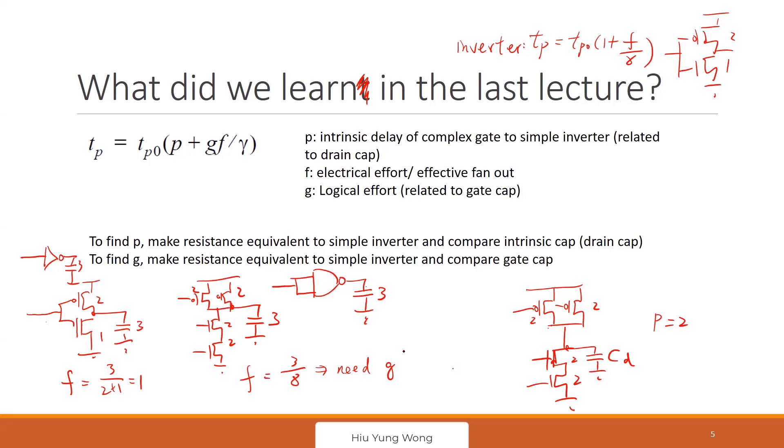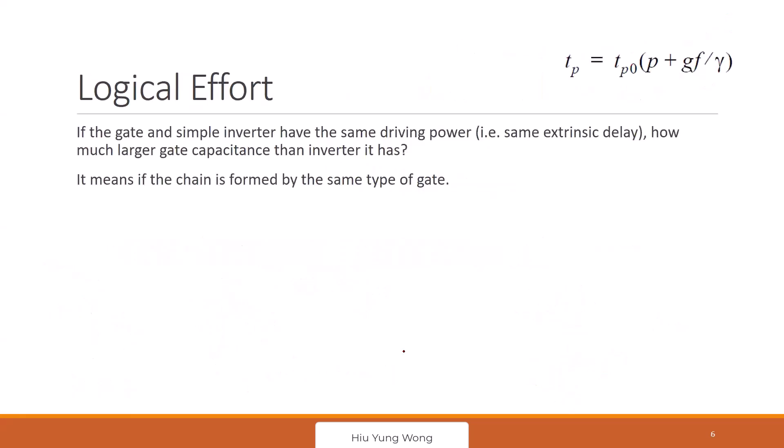I want to explain a bit more. Now let's try to calculate what is the fan out. The fan out is if the gate and simple inverter have the same driving power, same extrinsic delay, how much larger gate capacitor than the inverter it has?